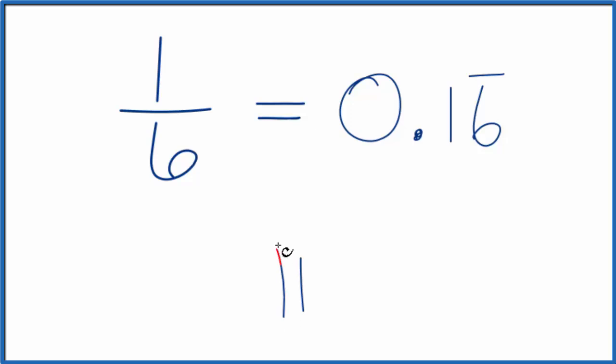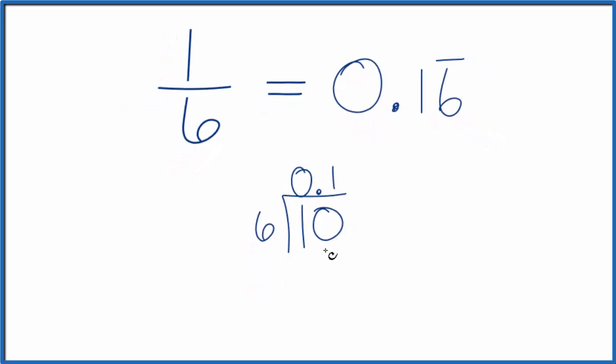So we have 1, and we want to know how many times 6 goes into 1. Well, 6 doesn't go into 1, so let's put 0. up here, and then we make this 10. 6 goes into 10 one time. 6 minus 10 is 4.